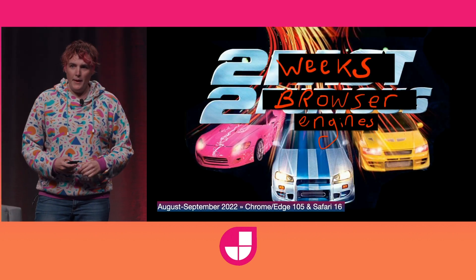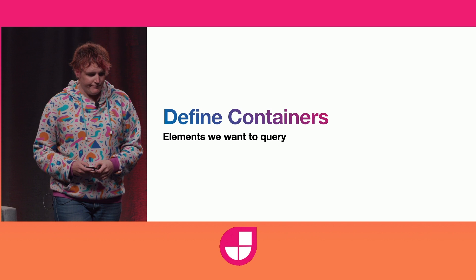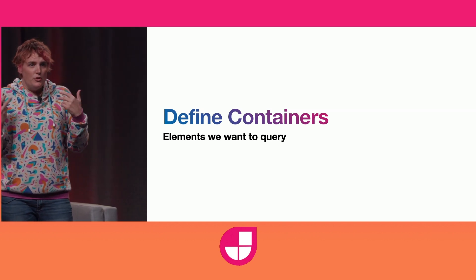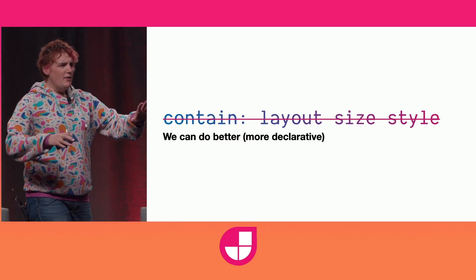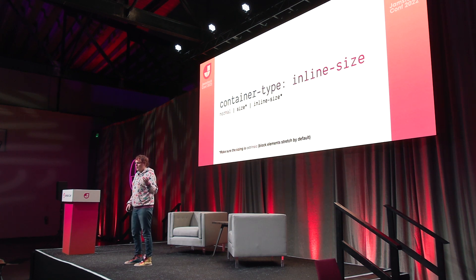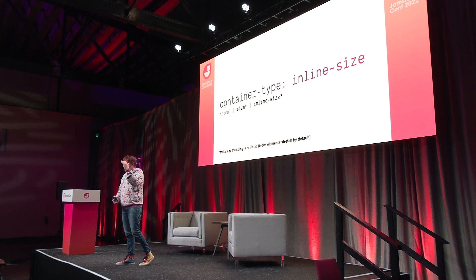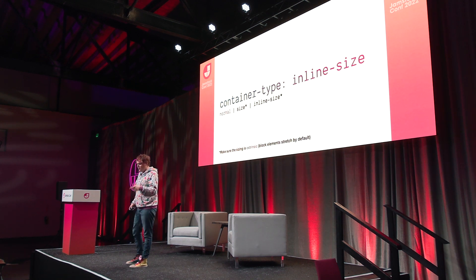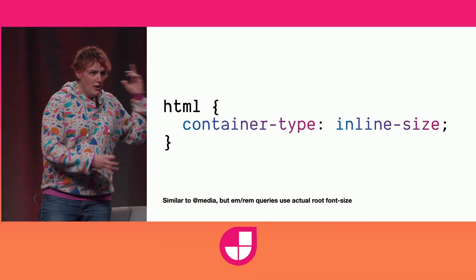We went from 'it's impossible' to 'it's shipping' — it landed in two browser engines within two weeks earlier this fall. So let's look at how to use them. First, we need to define containers that we want to query: elements on the page that should be queryable. Instead of specifying all the containments you need manually, there's a container-type property. The most common one to use will probably be inline-size. You can also set size containment if you want to measure and explicitly size both axes. Normal is the default. There is no default container on the page, so if you start adding container queries right away, there's nothing to query.